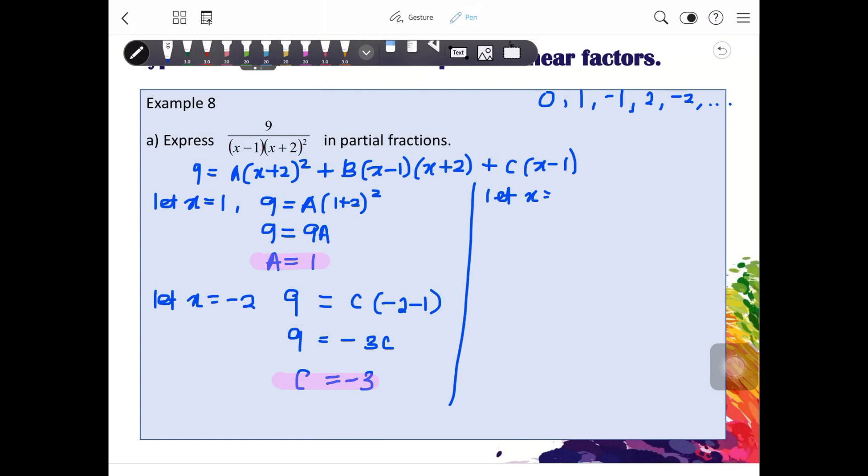So, we will let x to be 0. You will get 9 equals to A, 1. And then 0 plus 2 squared. Plus B, that we don't know. And then minus 1, 2. Plus C, negative 3, times with negative 1. So, we will get 4 is equals to negative 2B. And B is negative 2. So, we found the value of A, B, and C.